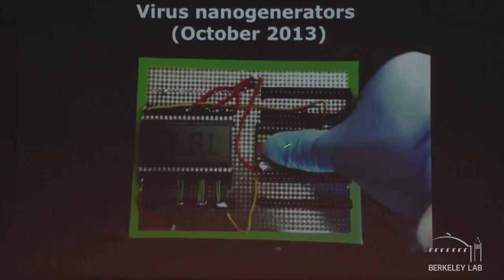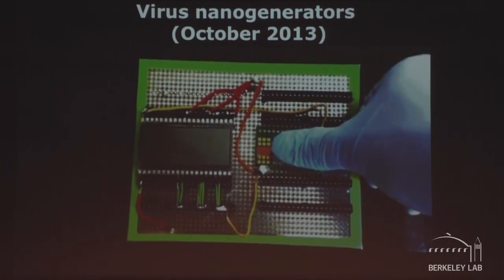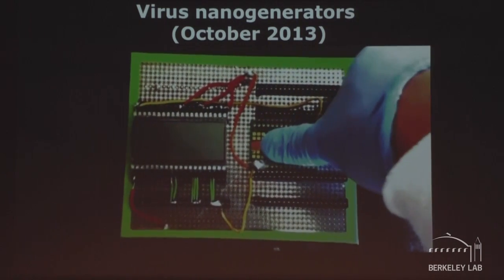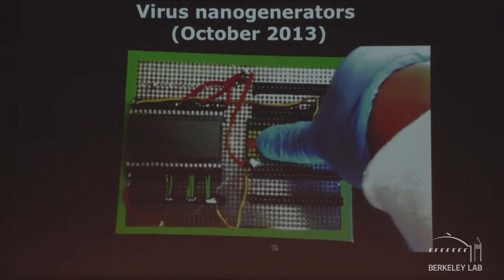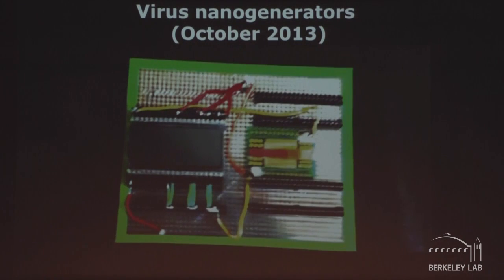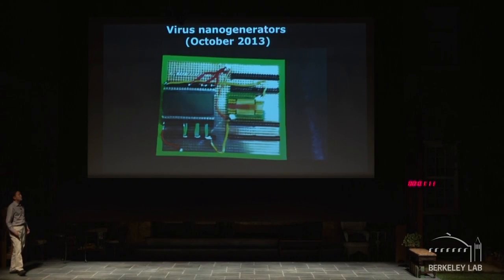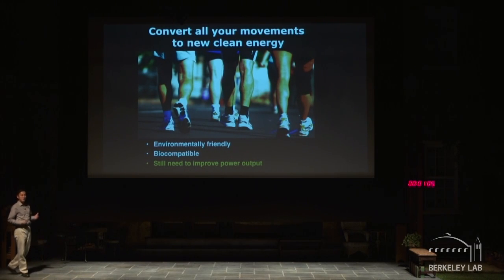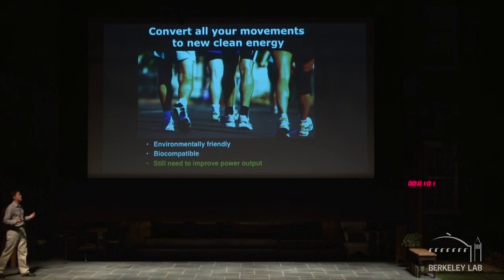With similar devices we can now spell out 'Lawrence Berkeley National Laboratory.' We envision that five or ten years from now, we can create a personalized electric generator mounted on our shoes, so that whenever we walk around we can produce clean and green energy.